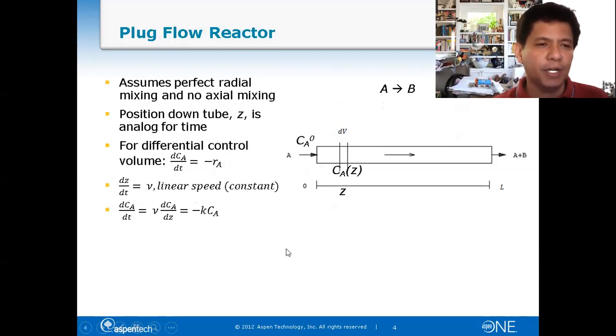The time until any given conversion of reactant is independent of reactor size, whether it's CSTR, PFR, or batch reactor. For PFR, we just convert the time to residence time. For PFR, we assume perfect radial mixing - along the radius it's fully mixed - but no axial mixing, meaning the flow is laminar. Position down the tube Z is analogous to time.